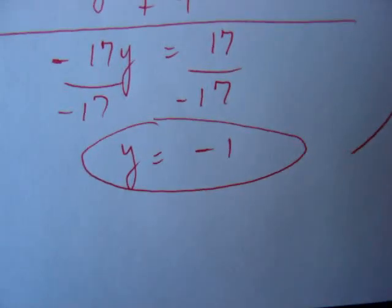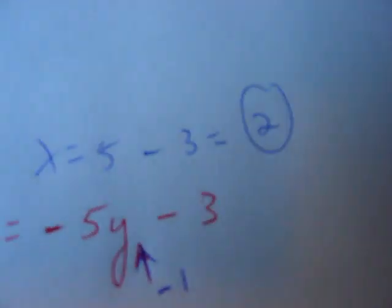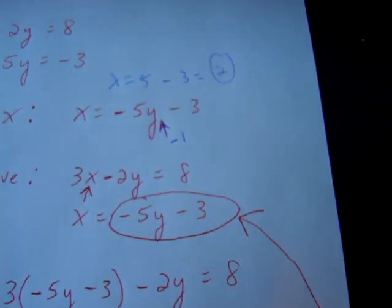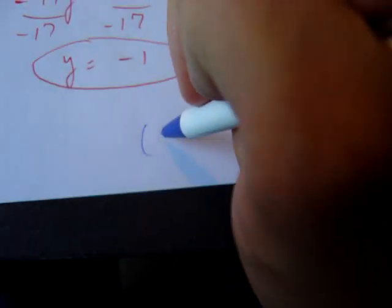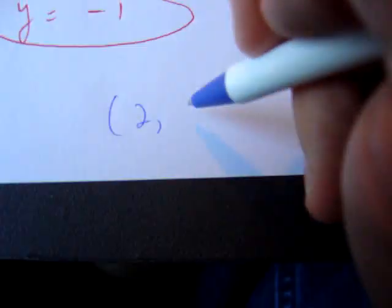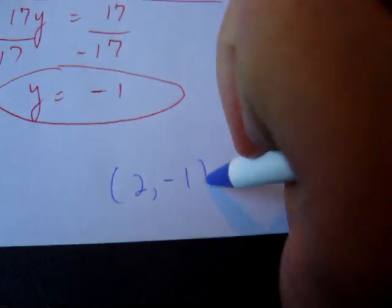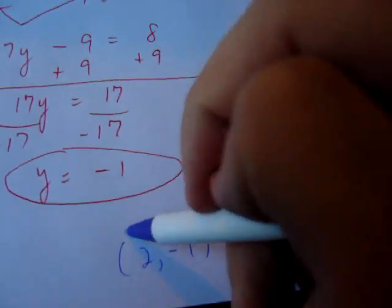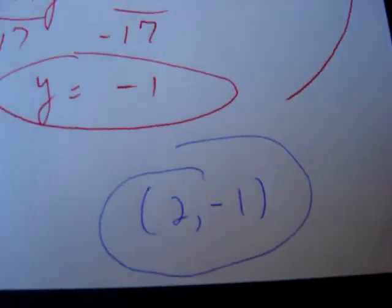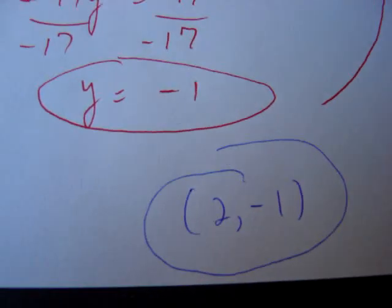So when you have y equals negative 1, x equals 2. Writing that as an ordered pair, we have 2 comma negative 1. That is the final and correct answer. 2 comma negative 1.